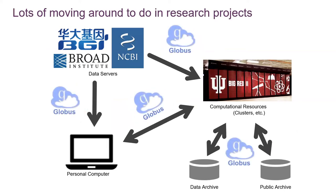We have something called Globus — it's a Globus endpoint. Globus is a third-party file transfer service. It's a paid subscription; IU pays for it, and all the national clusters pay for it. They all have an endpoint set up. It's essentially a website you can go to and say, go on to my IU computer, the scratch space, and take this file and drop it to the archive, which is the SDA. It's just a drag-and-drop file transfer.